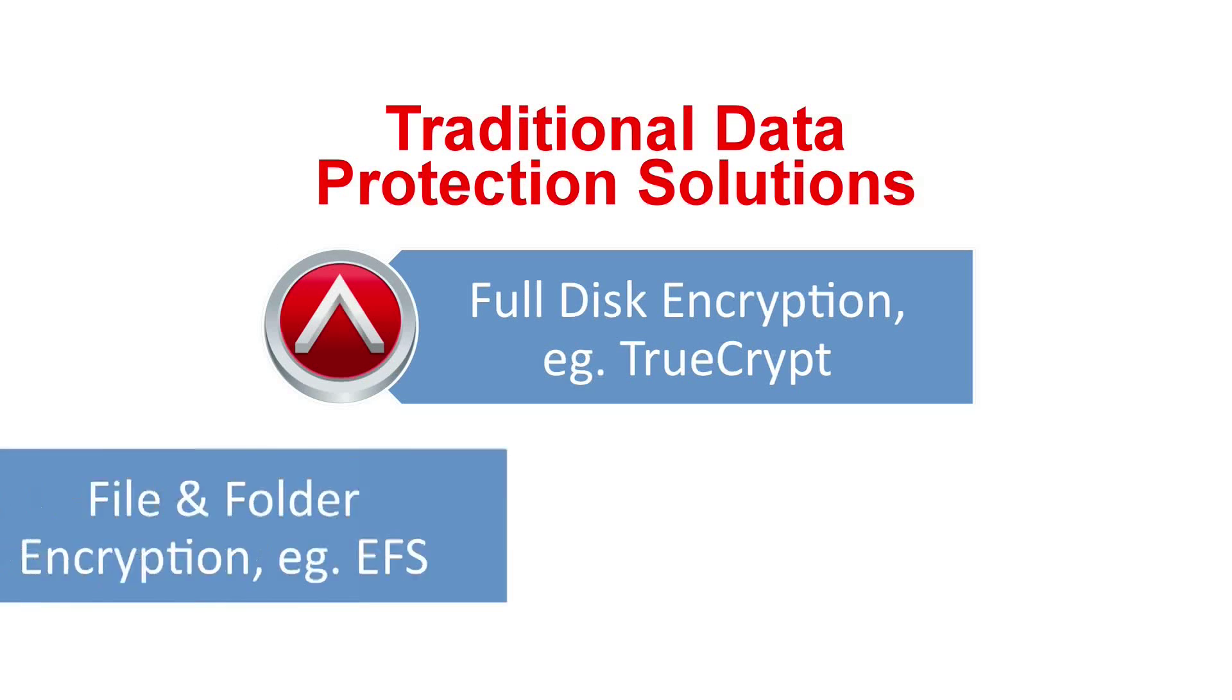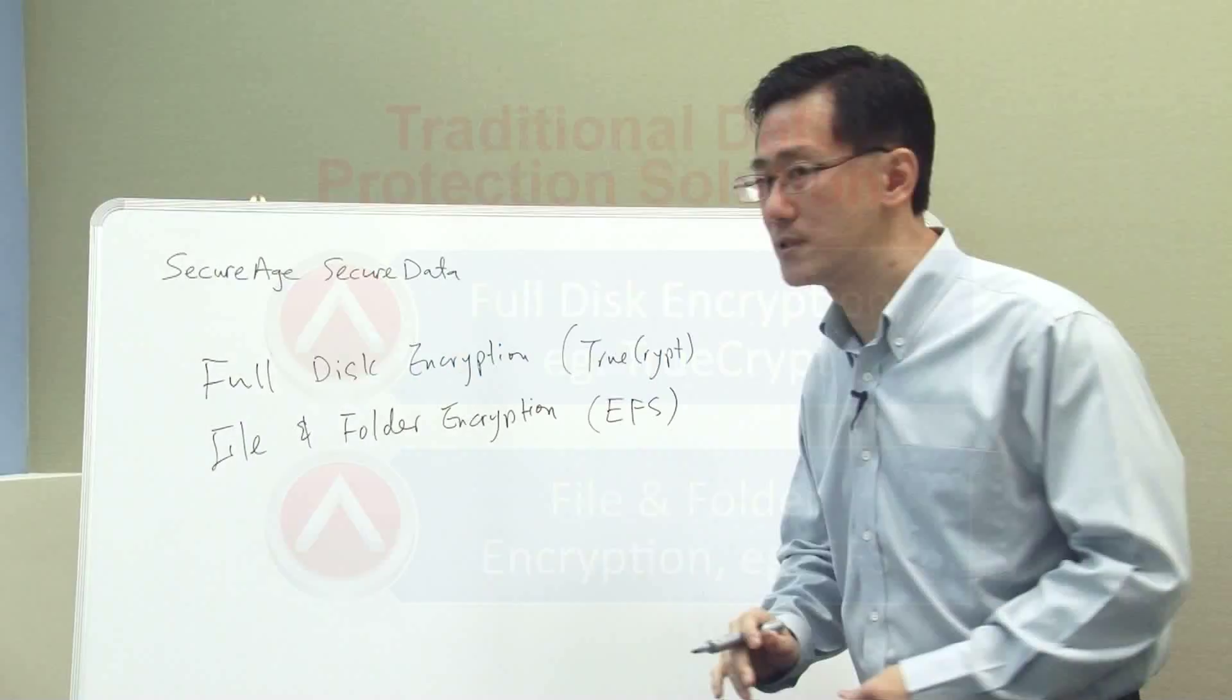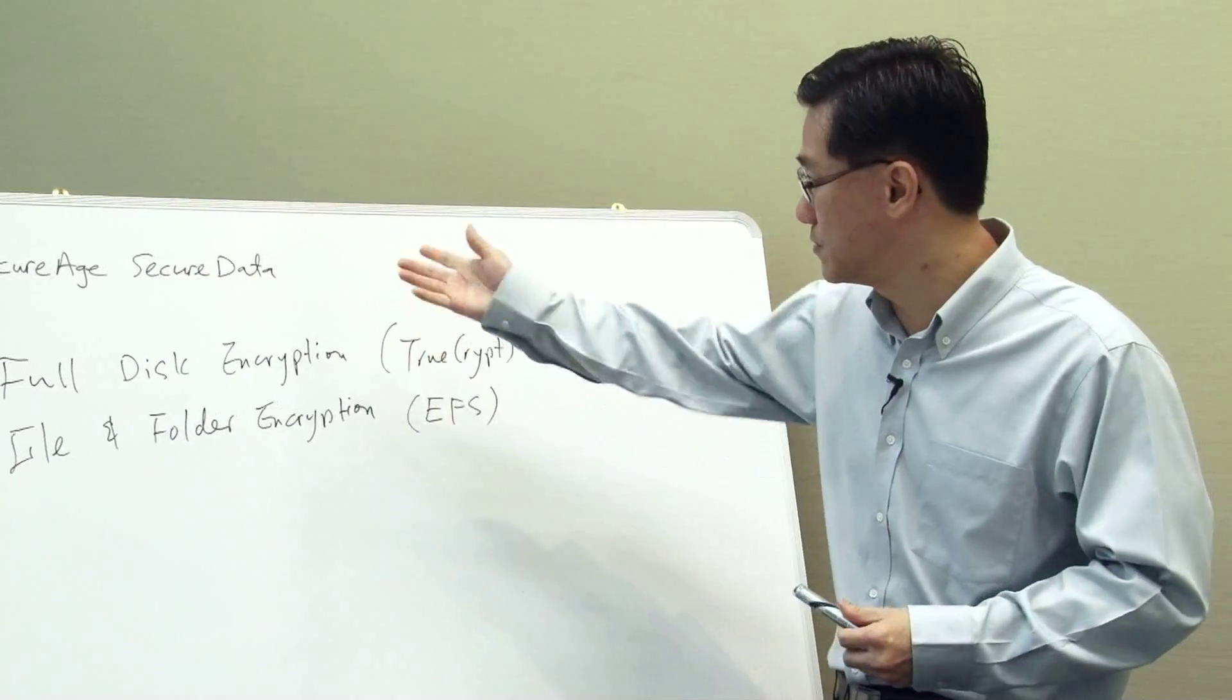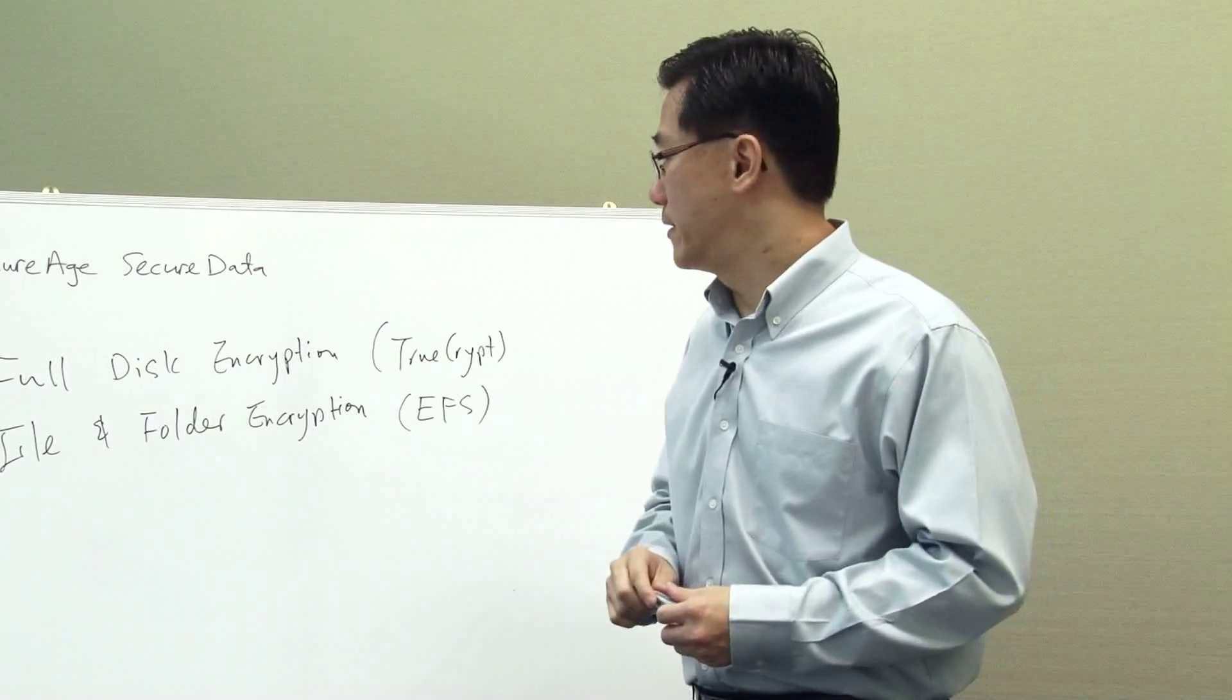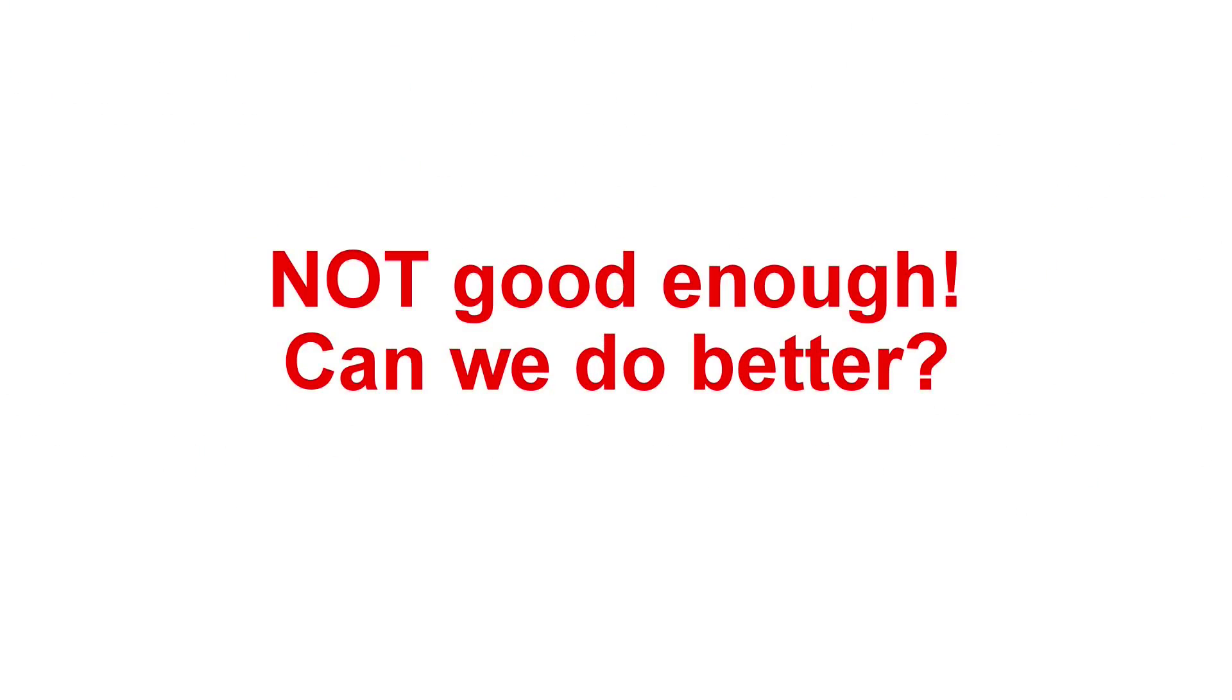I also have something called file and folder encryption, so things like Microsoft EFS and various other solutions belong to that category. So you might say, okay, I already have encryption, so what's so special about Secure Data? Let me first explain why this kind of solution in the past is not really good enough.